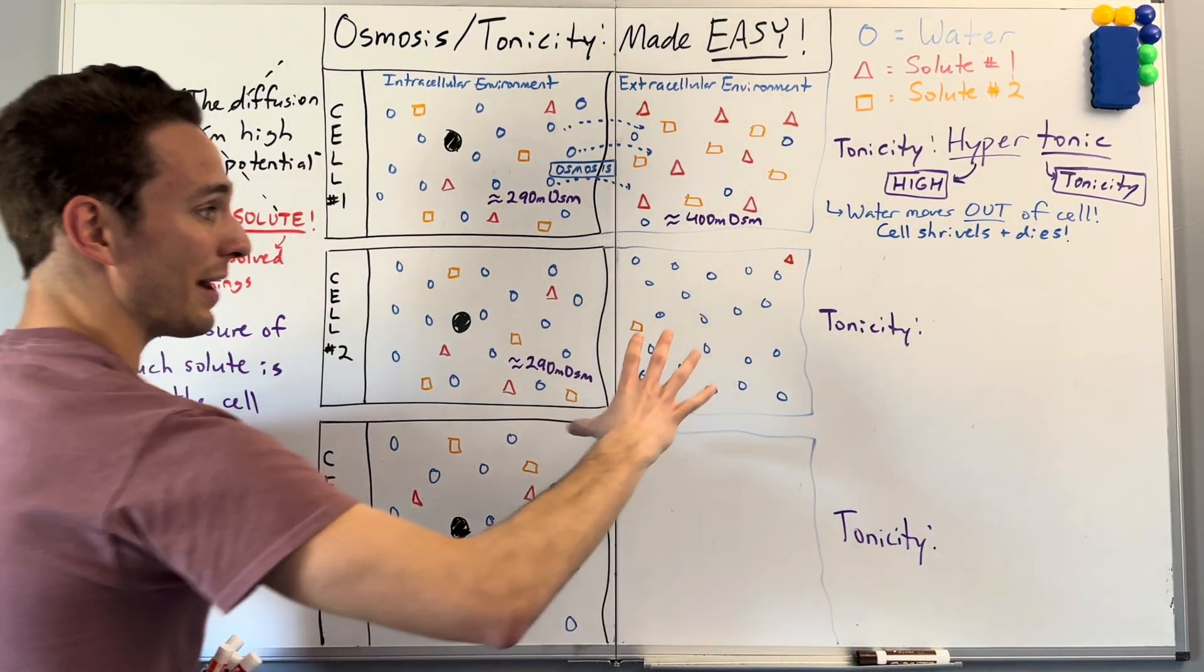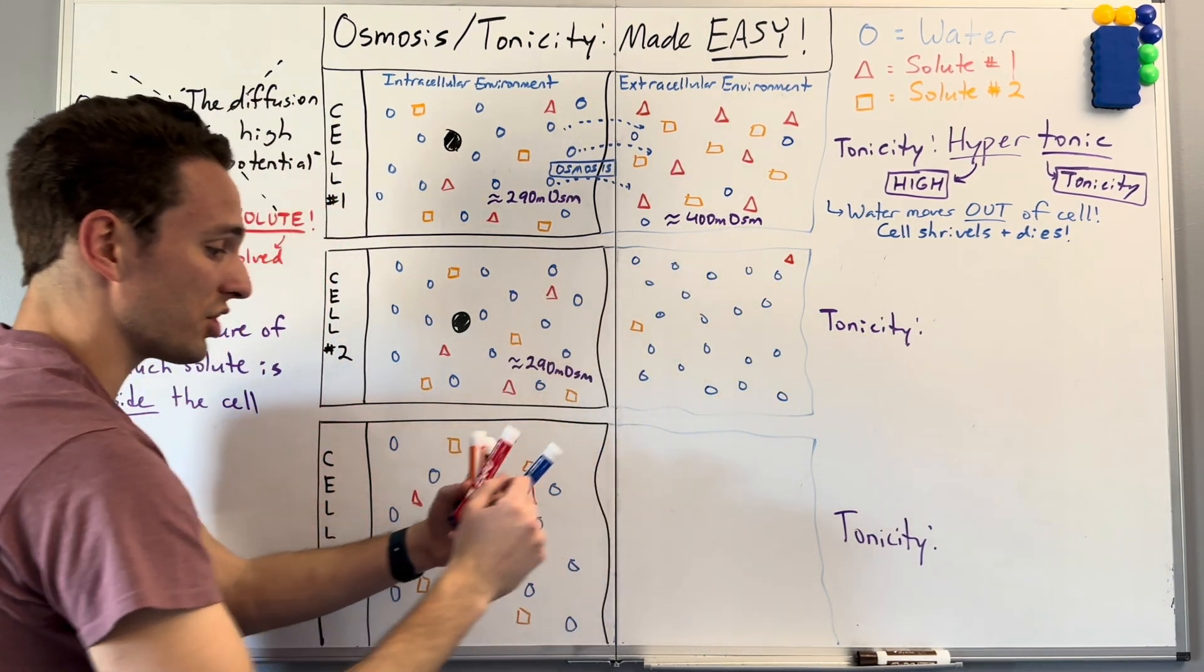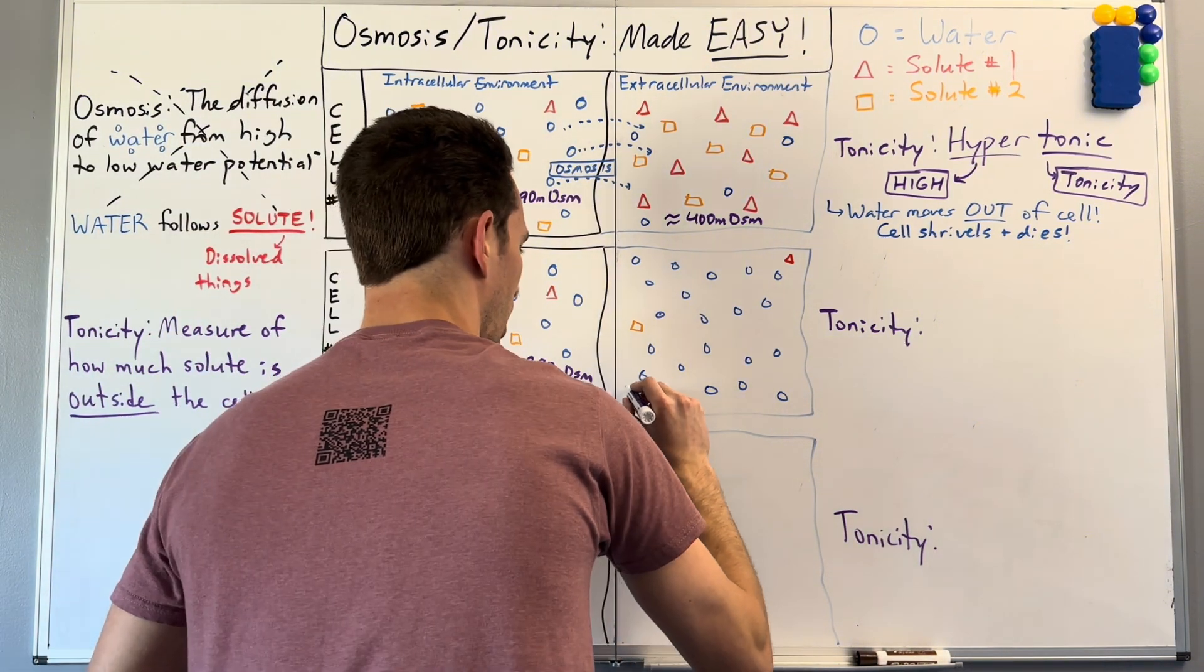All right. So in this case, we see a lot more water and a lot less solute. So this is a very diluted solution. And we'll say the milliosmolarity of this guy is, say, 100.